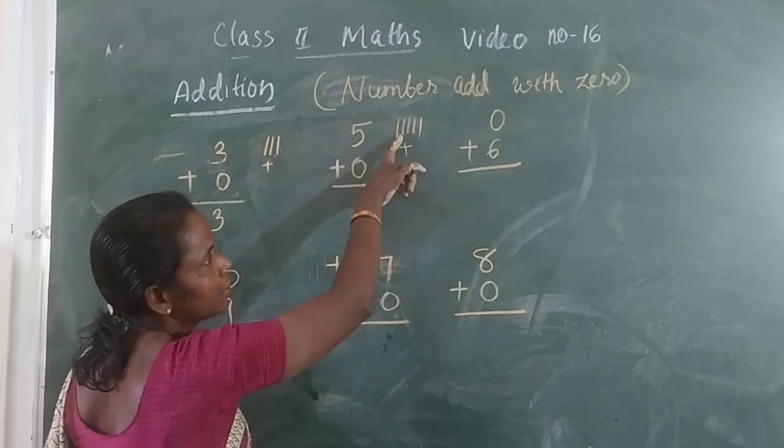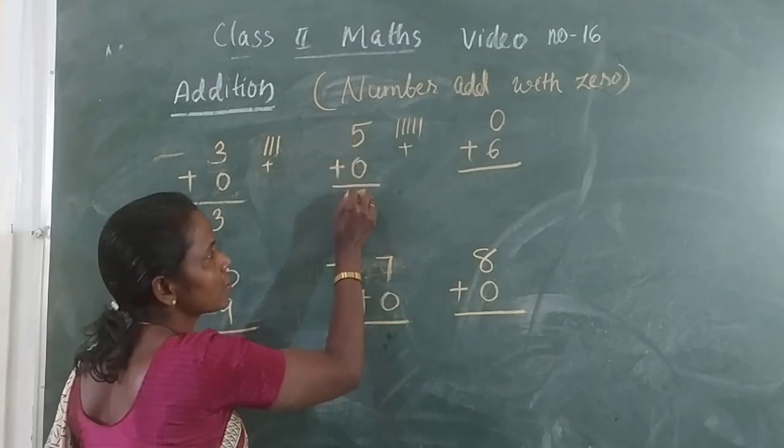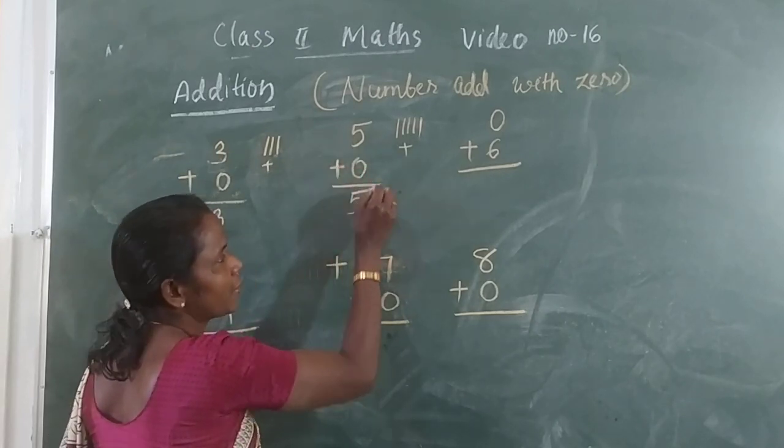So total is 1, 2, 3, 4, 5. So 5 plus 0, 5.